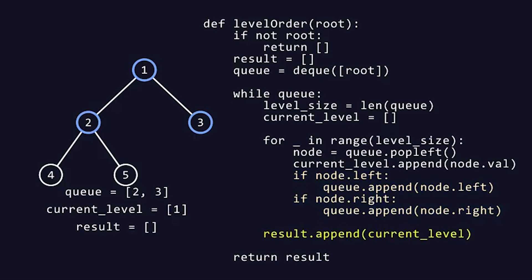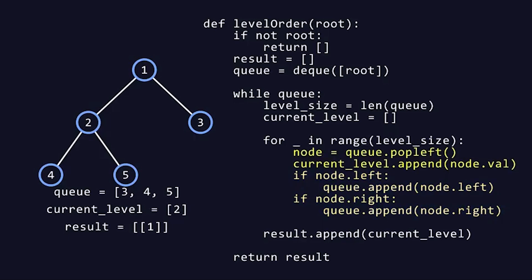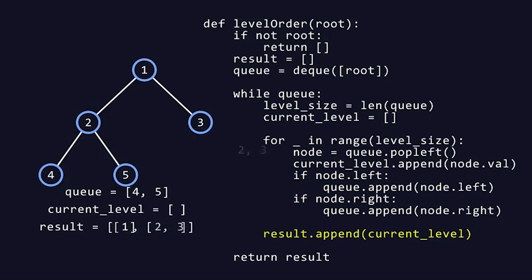The function then enters a while loop that continues as long as there are nodes in the queue, allowing us to process each level of the tree one by one. Inside the while loop, we first determine the number of nodes at the current level by setting level_size equal to the length of the queue. We also initialize an empty list called current_level to temporarily hold the values of the nodes at this level. The function then enters a for loop that runs level_size times, and in each iteration, a node is removed from the front of the queue using popleft and its value, node.val, is added to the current_level list.